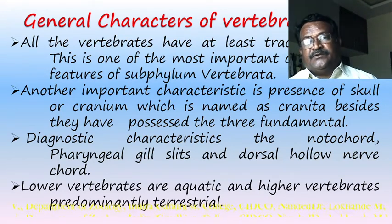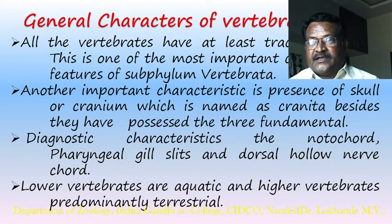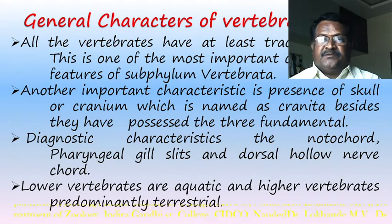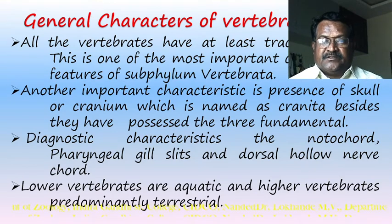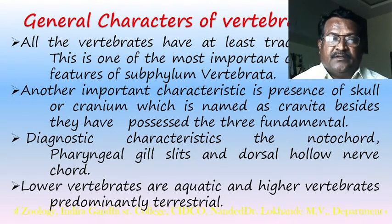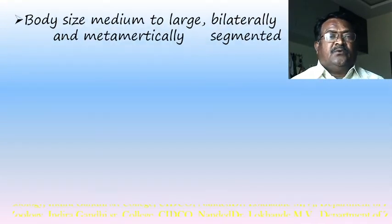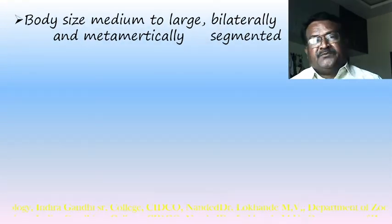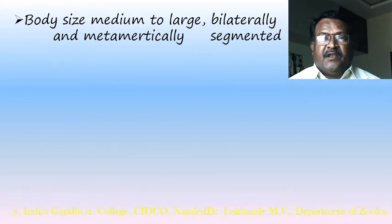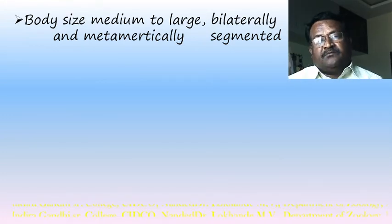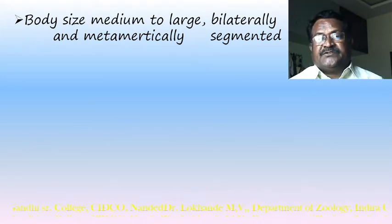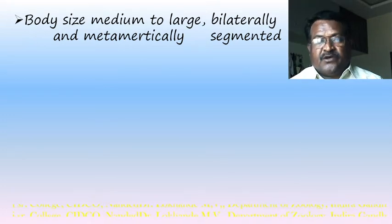Lower vertebrates are aquatic and higher vertebrates are predominantly terrestrial. The body size ranges from small to large — from small animals like fish to large animals like humans.